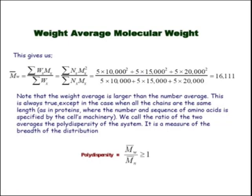We can recall the polydispersity index, which equals Mw / Mn, and this value is always greater than or equal to 1.